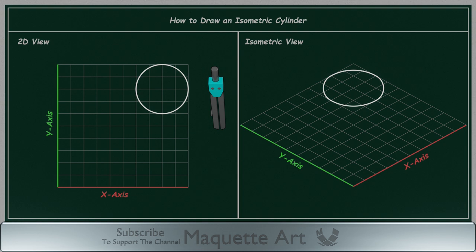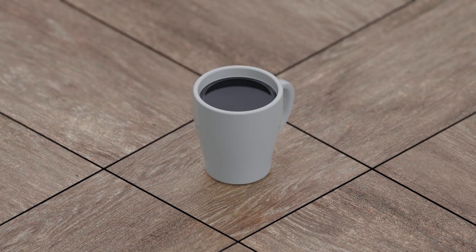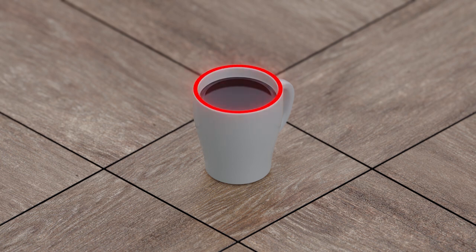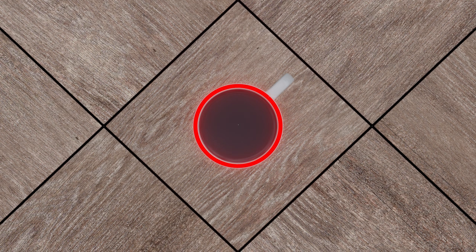To better understand why it looked like an ellipse, when you look at a cup of coffee for example, you can see that the top of the cup is an ellipse shape. But if you look at this same cup from a top view, you can see it as a circle, but you can't see the height of the cup.